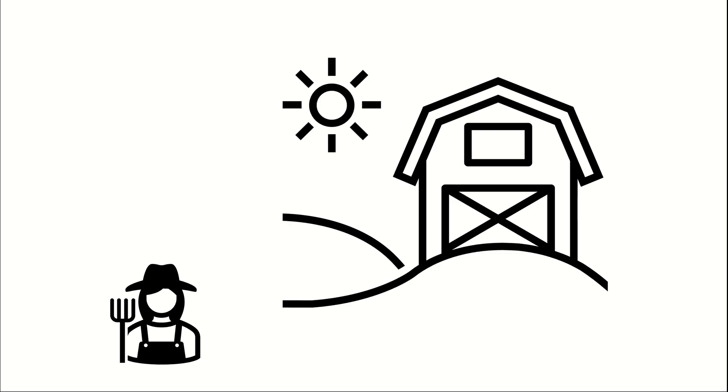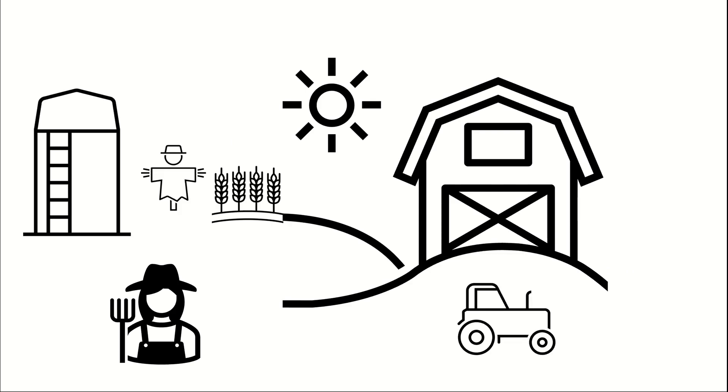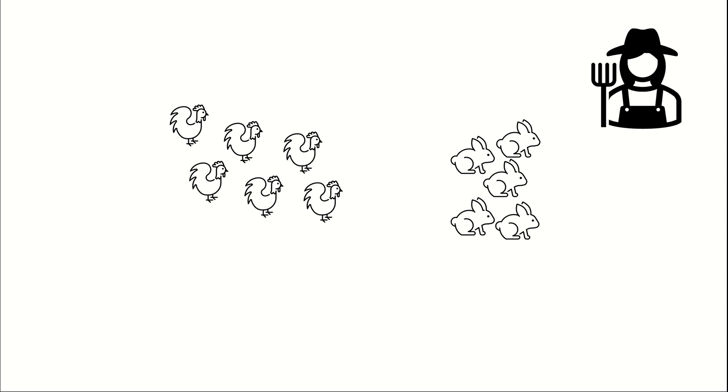Once upon a time, there was a farmer who has a very big farm, and in her farm she's got some chickens and some rabbits. One evening, a storm came through and blew away some of the chickens and rabbits.